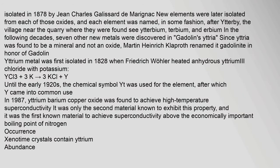A fourth oxide, terbium oxide, was isolated in 1878 by Jean-Charles Galissard de Marignac. New elements were later isolated from each of those oxides, and each element was named after Ytterby, the village near the quarry where they were found — see ytterbium, terbium, and erbium. Seven other new metals were discovered in Gadolin's yttria. Since yttria was found to be a mineral and not an oxide, Martin Heinrich Klaproth renamed it gadolinite in honor of Gadolin. Yttrium metal was first isolated in 1828 when Friedrich Wöhler heated anhydrous yttrium chloride with potassium. In 1987, yttrium barium copper oxide was found to achieve high-temperature superconductivity, and it was the first known material to achieve superconductivity above the boiling point of nitrogen.